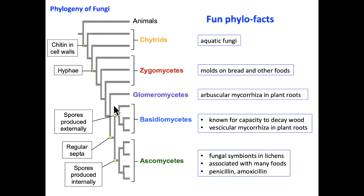We also have fun facts about different groups of fungi. The chitrids are the aquatic fungi, common in many lake and river systems. The molds we see on bread and other foods left in the kitchen too long belong largely to the zygomycetes group. The glomeromycetes are most commonly known as arbuscular mycorrhizae plant roots — symbiotic relationships between a plant and the fungus for the purpose of acquiring nutrients.